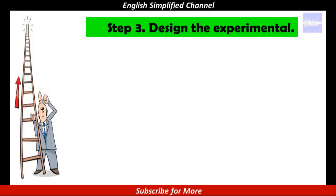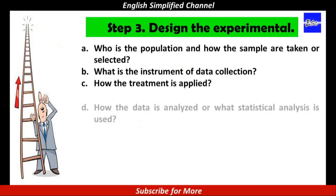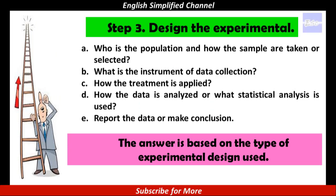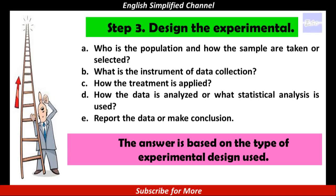And now we come to Step 3: design the experimental. In designing the experimental research, we should consider these points: A. Who is the population and how the sample are taken or selected? B. What is the instrument of data collection? C. How the treatment is applied? D. How the data is analyzed or what statistical analysis is used? E. Report the data or make a conclusion. These can be understood under the types of experimental research design, such as pre-experimental research design, quasi-experimental research design, true experimental research design, and factorial design.